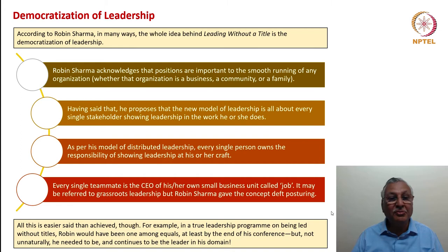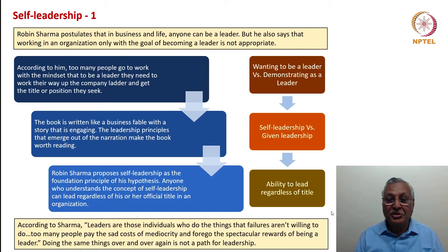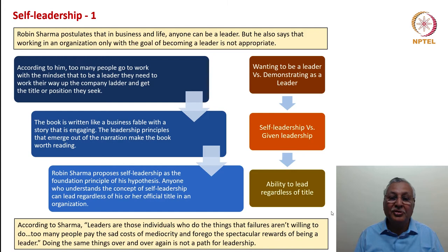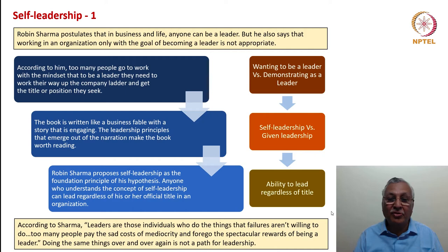The whole point being made is that the mindless pursuit of titles is misleading and non-appropriate. Robin Sharma proposes a distinction between wanting to be a leader and demonstrating leadership. To be actually a leader, one must demonstrate mastery at whatever work one is doing. He also proposes self-leadership versus given leadership: don't seek titles, but demonstrate the ability to lead by yourself so that leadership naturally comes to you. The ability to lead regardless of title is fundamental to development of stature in an organization.